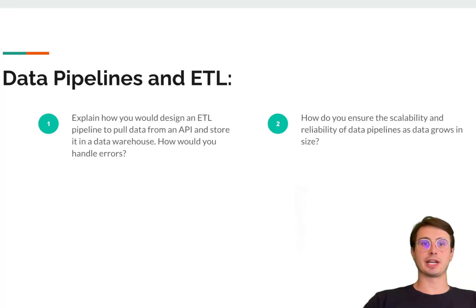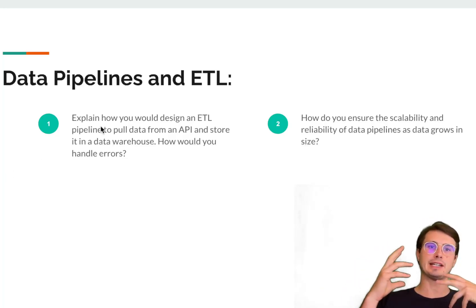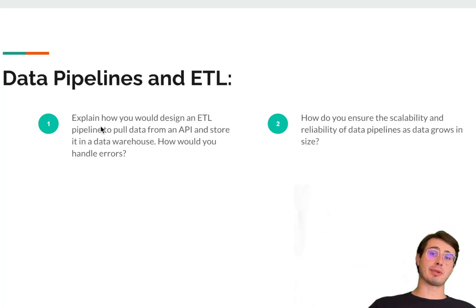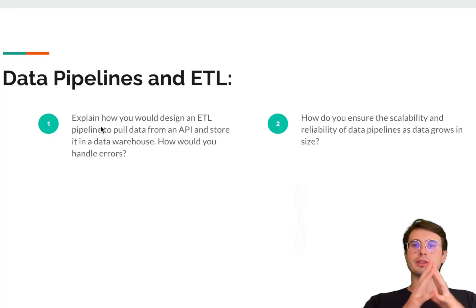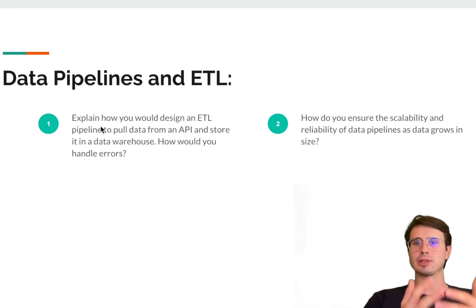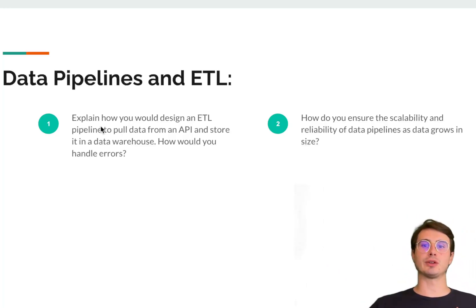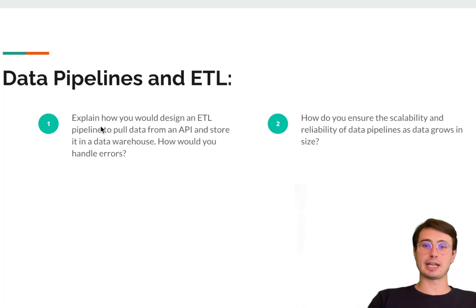Under data pipelines and ETL questions, you're going to have questions like: how would you design an ETL pipeline that pulls data from an API and stores it in a data warehouse — and how are you going to handle errors? Here it's about not only designing the pipeline and talking about what solutions you're going to use, but also thinking about your error handling logic — how would you automate that or set up notifications? So designing past a simple ETL pipeline and actually accounting for certain system conditions.